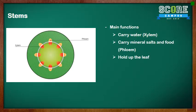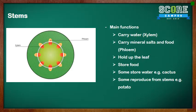The stem holds the leaf up so that they can get better sunlight. Some plants have weak stems which climb up something to reach the sunlight. Most plants store food in the form of starch in their stems. Other plants like the cactus store water in the stem and plants like potato reproduce from their stems.